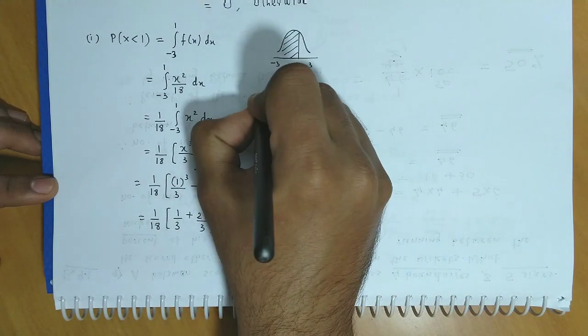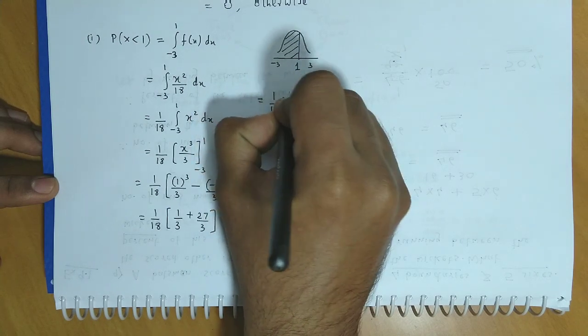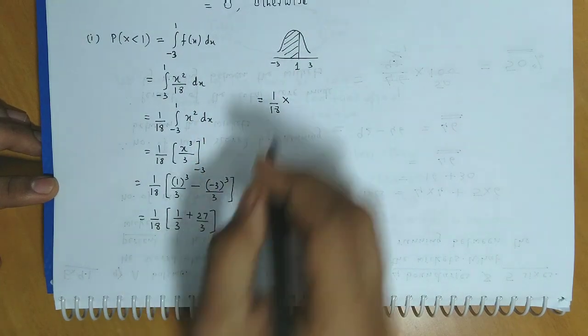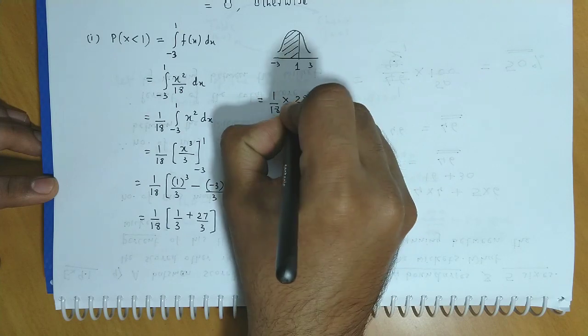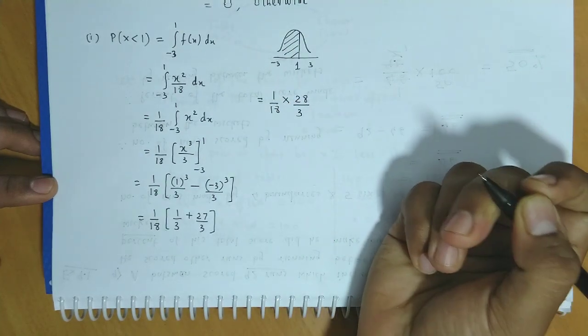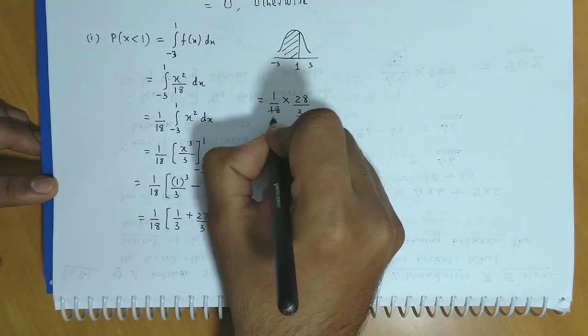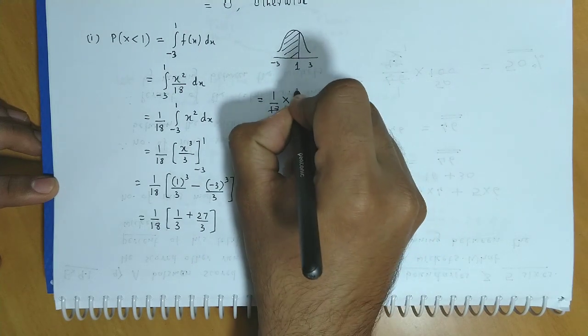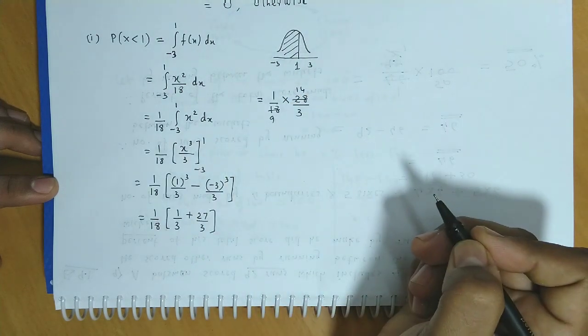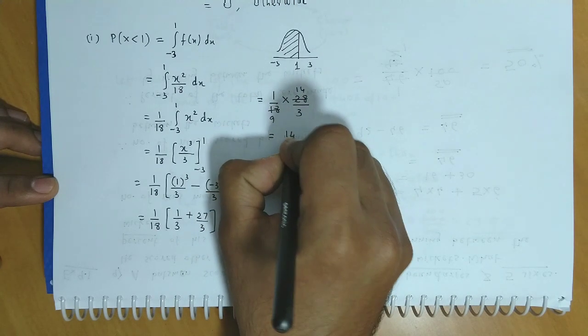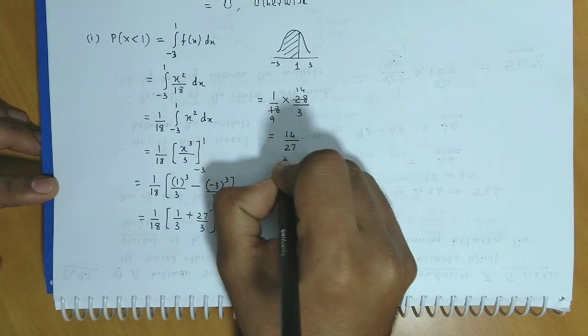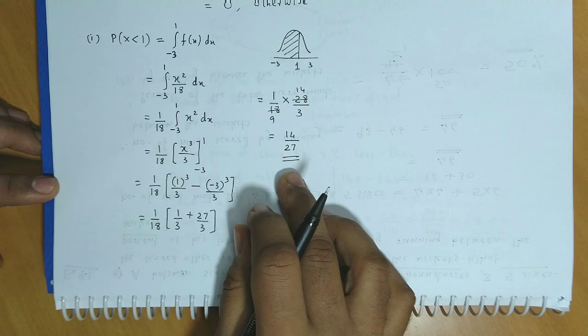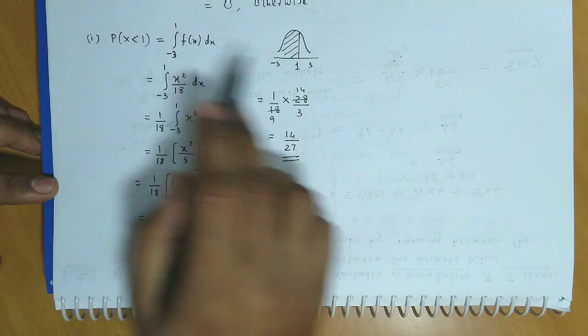So we have 1 by 18 into 28 by 3. Now we reduce it: 18 becomes 9 times 2, so we get 14 upon 27. So this is the probability for x less than 1.